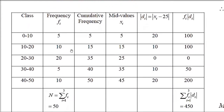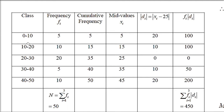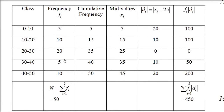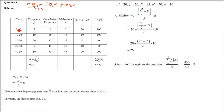The first question asks us to compute the mean deviation from the median of the given distribution. Two columns are given: class and frequency. Since we cannot directly use class boundaries as data values, we find the central (mid) value by adding the lower and upper limits and dividing by 2. For example, 0 to 10 gives (0+10)/2 = 5. This mid value is regarded as Xi.